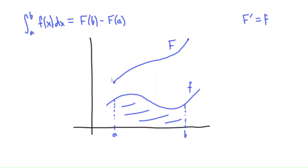Why is F increasing? Remember, if the derivative of capital F is lowercase f, that means if we pick a point on the curve and draw in a tangent line, the slope of that tangent line equals the height of the function f. So if the slope is, say, 1.7, then the height here is 1.7. Since our function f is always positive, the slope of capital F is always positive, so capital F is an increasing function.